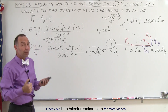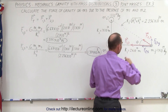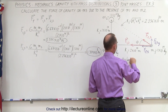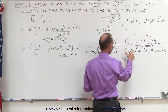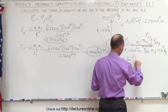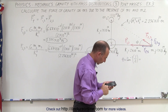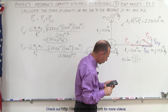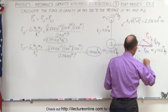Now to find the components, we're going to need the angle theta, so we can use the arc tangent. Theta equals the arc tangent of the opposite side divided by the adjacent side. The ratio would be 1 to 2, so arc tangent of 0.5 gives us 26.57 degrees.